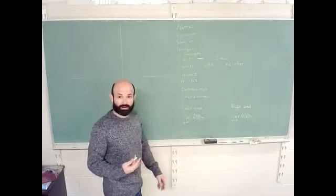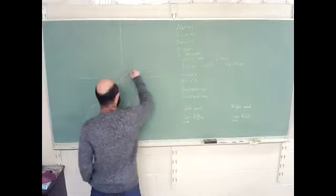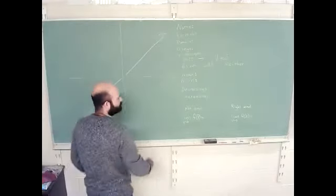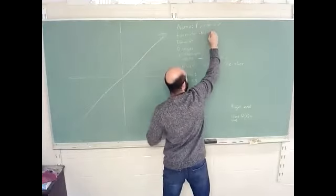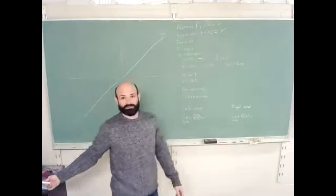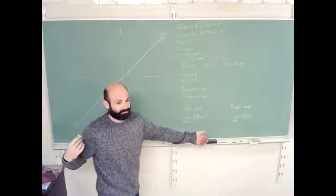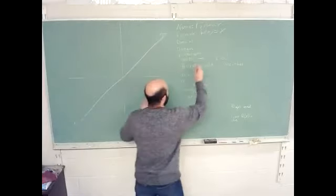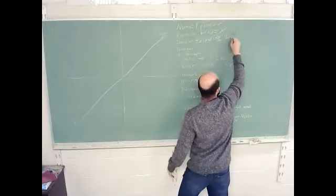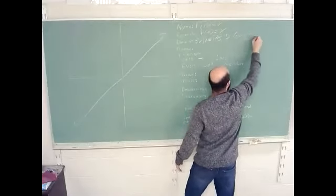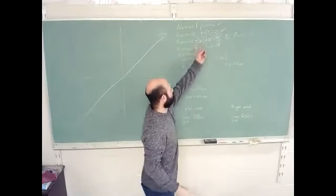Let's get through all nine basic functions in Algebra 2. The first one is the linear function — a line going through the origin with a slope of one. Its formula is f(x) = x. The domain is all real numbers, and the range is all real numbers — y such that y is real.